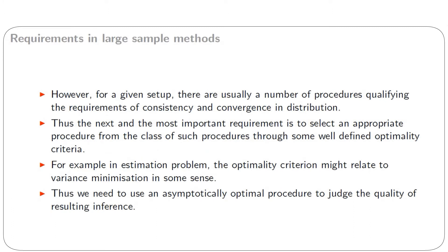For a given setup, there are usually a number of procedures qualifying the requirements of consistency and convergence in distribution. Thus, the next and most important requirement is to select an appropriate procedure from the class of such procedures through some well-defined optimality criteria. For example, in an estimation problem, the optimality criterion might relate to variance minimization in some sense. Thus, we need to use an asymptotically optimal procedure to judge the quality of the resulting inference.